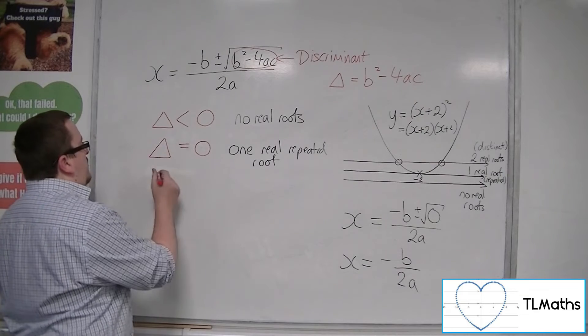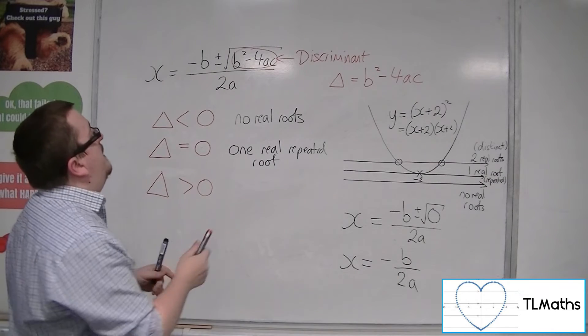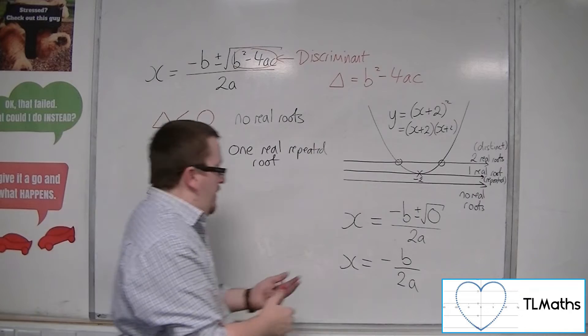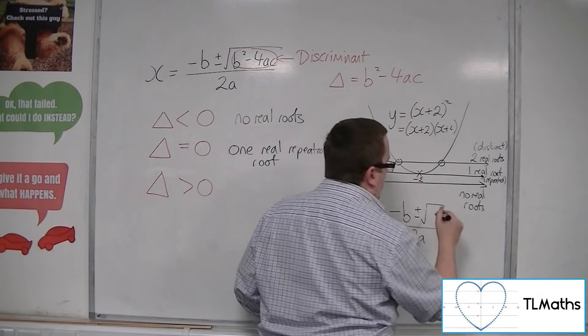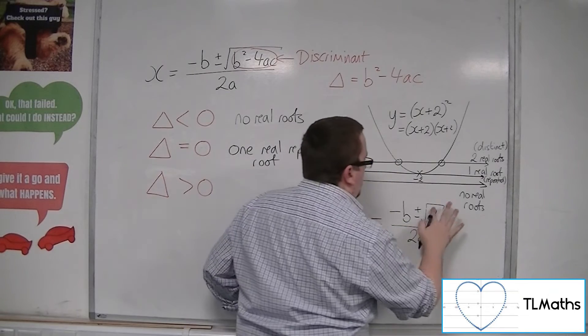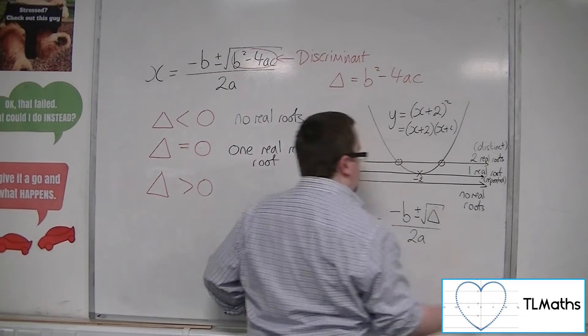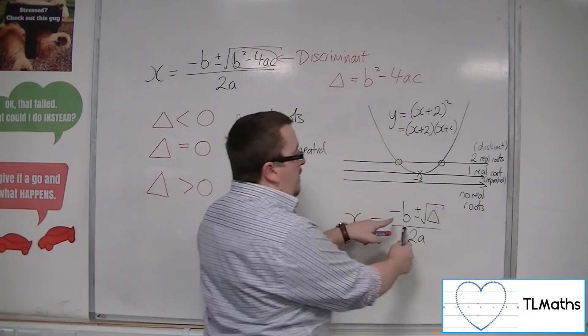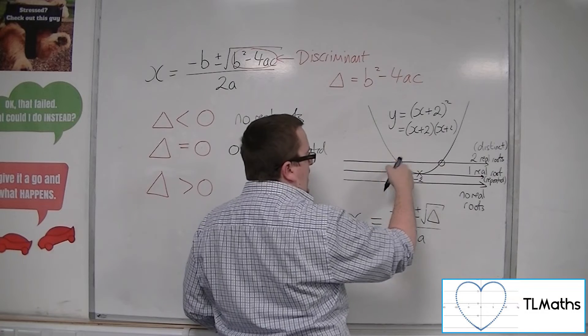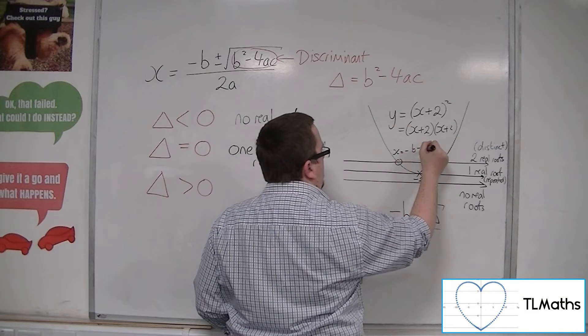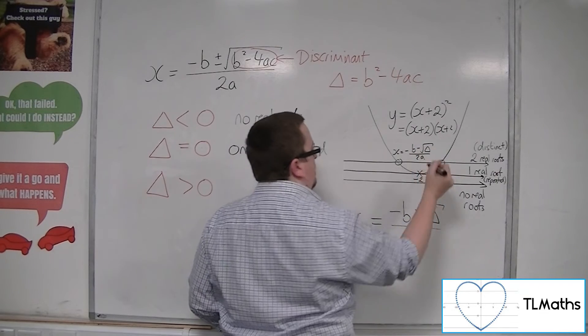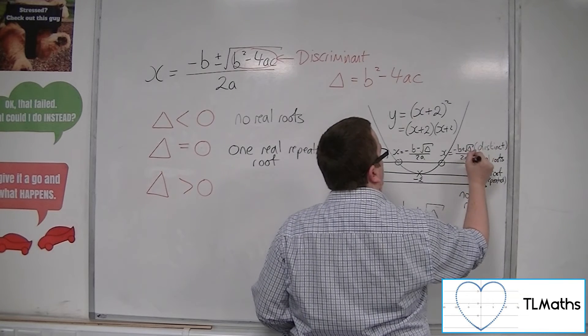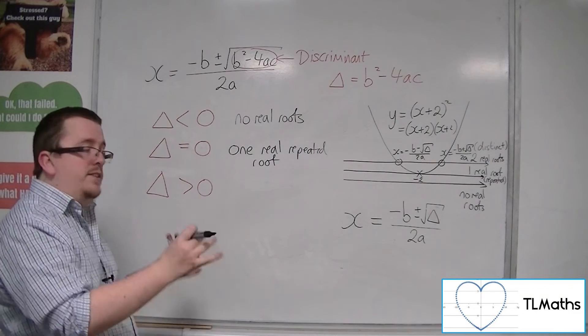Now if that discriminant is greater than 0, then that means that this can be found. This square root of this number will just give us another number. So minus b plus the square root of the discriminant over 2a, or minus b minus the square root of the discriminant over 2a. So this point here would be x equals minus b minus the square root of the discriminant over 2a. And this point would be x equals minus b plus the square root of the discriminant over 2a. And you get these two distinct real roots.